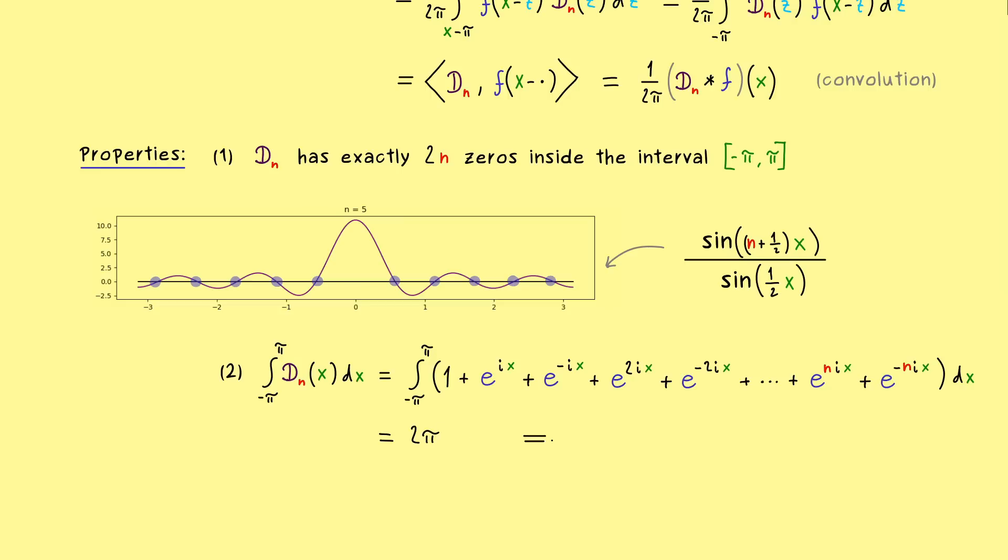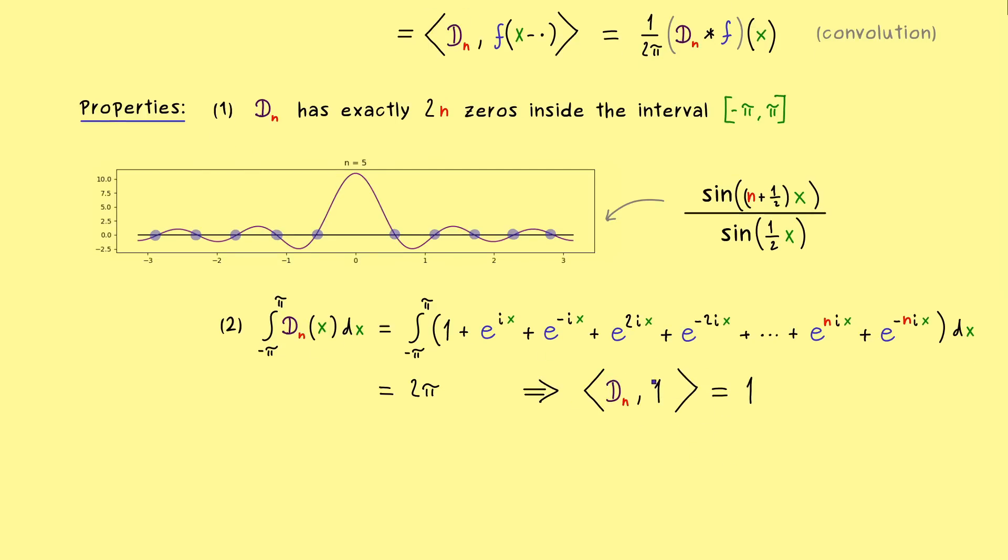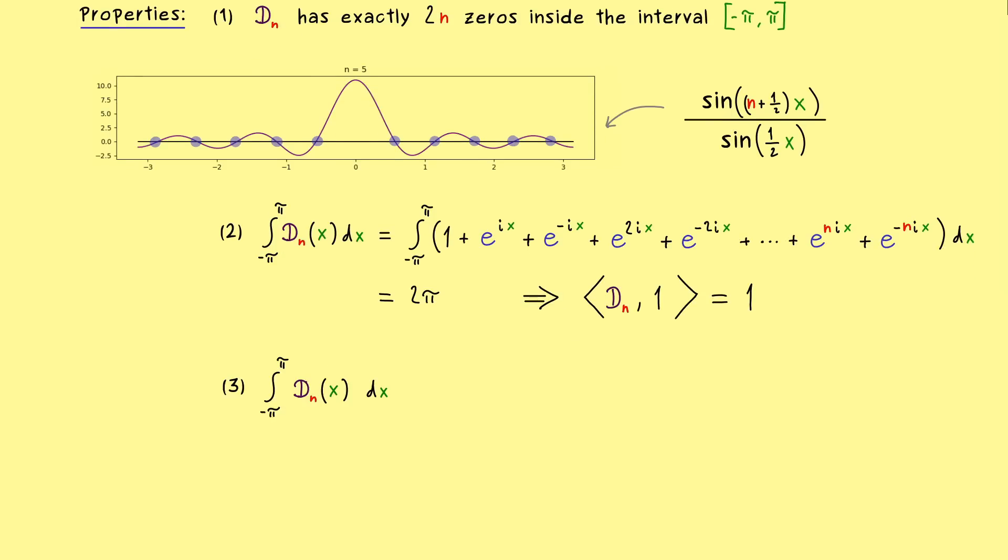And this has a nice consequence, because 2π is exactly the factor we have in front of our inner product. This means if we have D_n applied to the constant function 1 in our L² inner product, then we always get out 1, no matter what n is. So you could say, in that sense, our D_n is normalized. Okay, and now for the third property, I want to look at the integral of D_n again, but now with the absolute value inside.